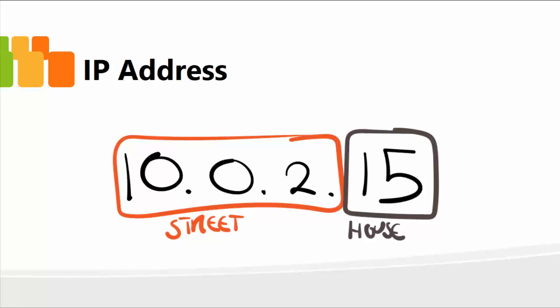A similar concept applies to a network. Each computer on the network has to have a unique address so that information can be shared and data can be sent. And this is called the IP address.